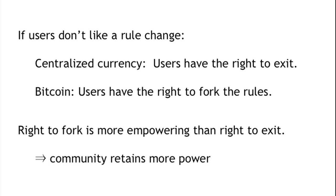With Bitcoin, because it operates in an open source way, you have the right to fork the rules. That means you and perhaps some colleagues can decide you'd rather live under a different rule set, fork the rules, and go a different direction from where the lead developers have gone. The right to fork is more empowering for users than the right to exit. You can exit if you want, but the right to fork actually gives you more power. Therefore, the community has more power in a system like Bitcoin, which is open source, than it would have with a purely centralized system.